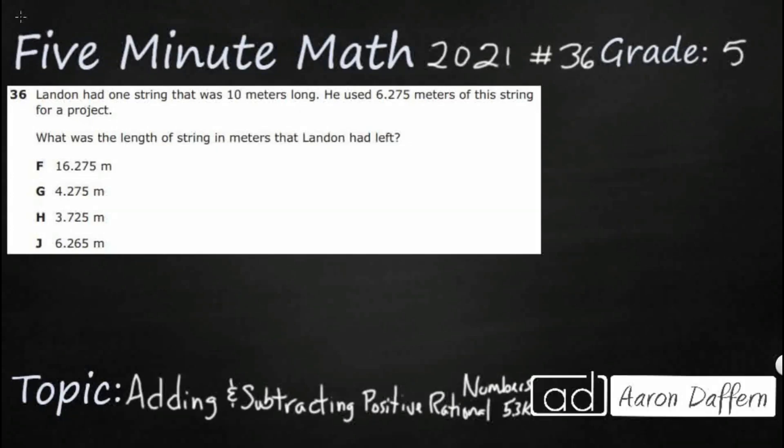Hello and welcome to 5-Minute Math. Today we are looking at the fifth grade concept of adding and subtracting positive rational numbers. This is standard 5.3k in the great state of Texas and we are using item number 36 off the 2021 released STAAR test.